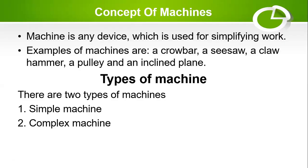Let's see the concept of machines. The machine is any device which is used for simplifying work. Any device or tool equipment that is there for simplifying work is what we call a machine. Examples of such machines include a crowbar, seesaw, claw hammer, pulley, and the inclined plane.